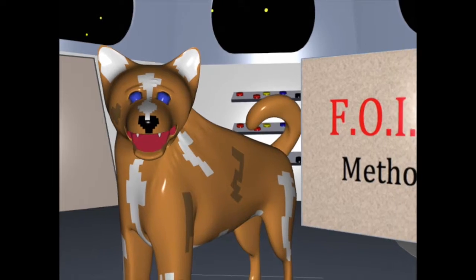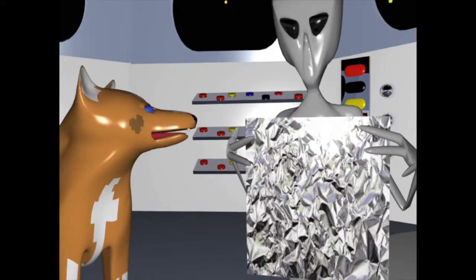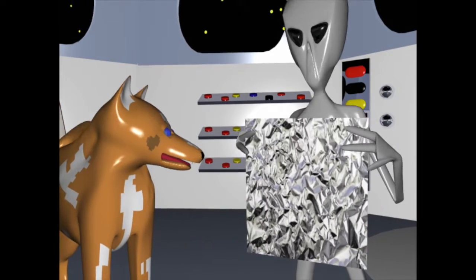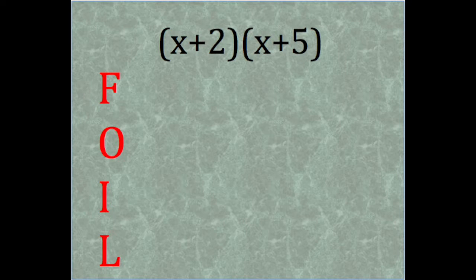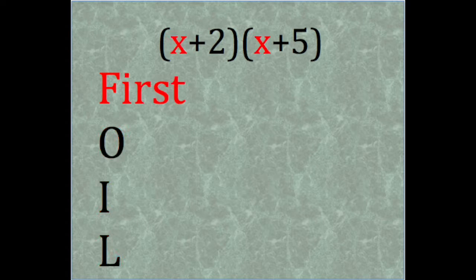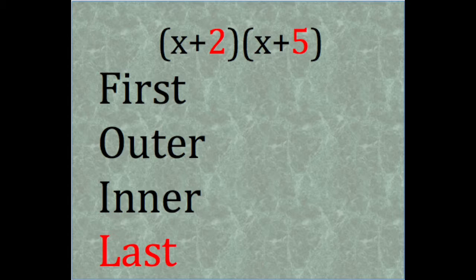One method we could use is called the FOIL method. Carl, is that aluminum foil? That's not what we mean by the FOIL method. The FOIL method is a way of multiplying two binomials. It stands for First, Outer, Inner, and Last.